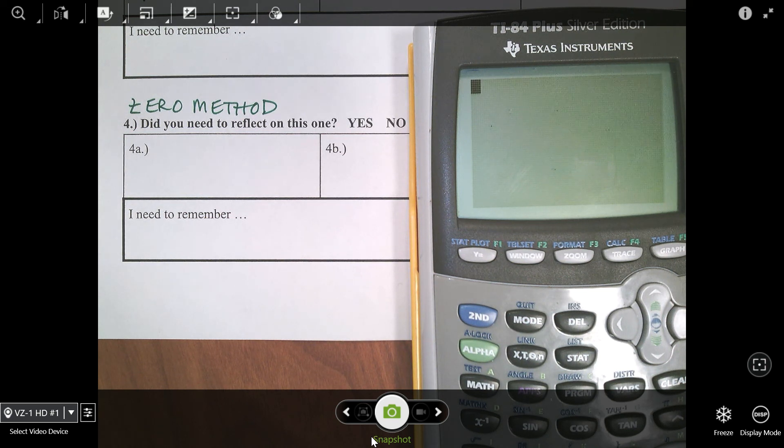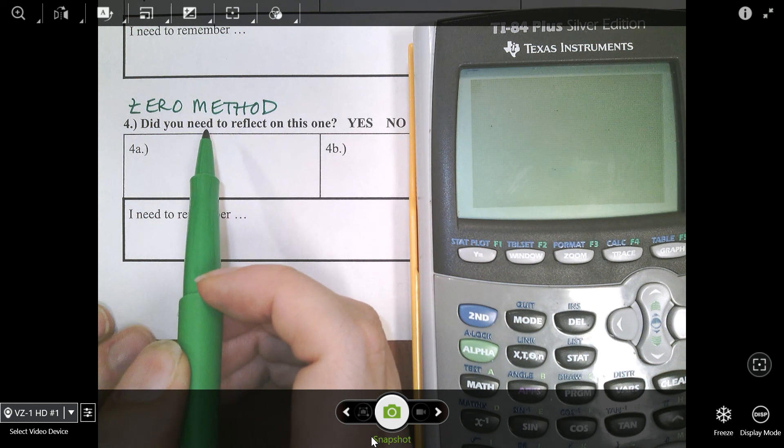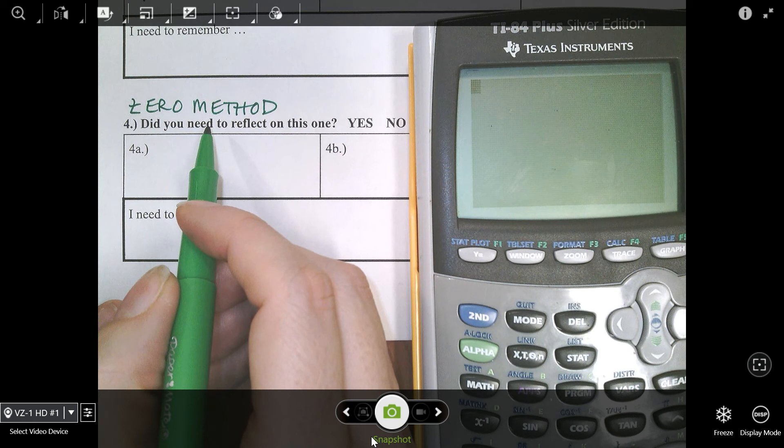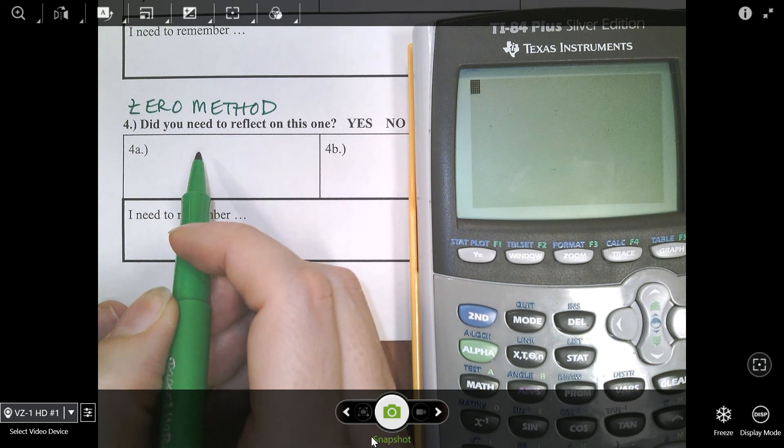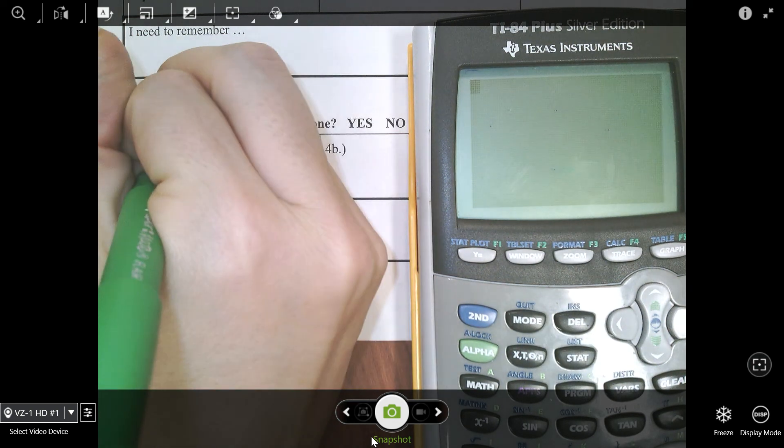This is 4a using the zero method. In these problems, to use the zero method, you first have to make sure they're in standard form, or at least everything is on one side of the equal sign. Here's my problem.